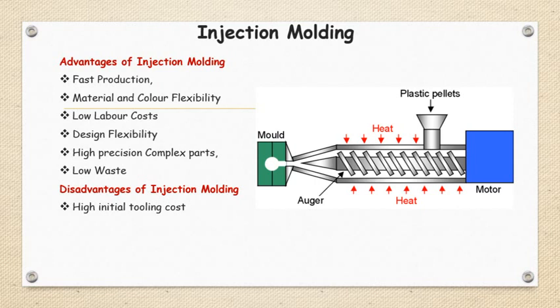The first advantage of the injection molding process is that the cycle time is very less, making it a very fast production process. The cycle time includes: time for pouring raw plastic into the hopper, time to heat the raw plastic material, time for clamping the two mold cavities, time for injecting the molten plastic material, time for cooling the injected plastic in the mold, and time for ejection. This total cycle time is very short compared to other processes.